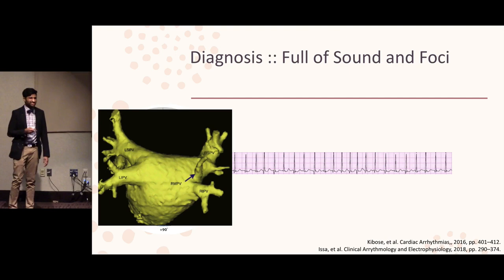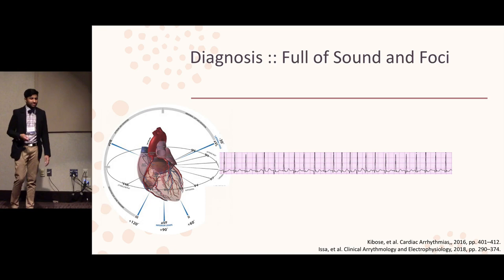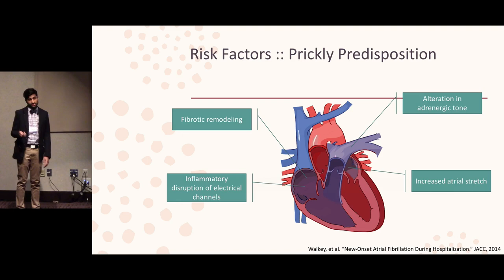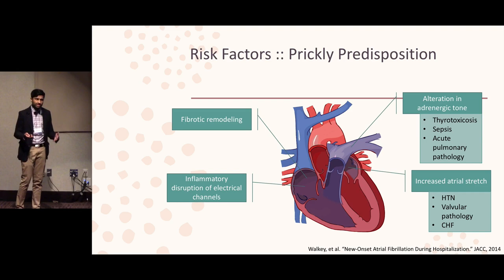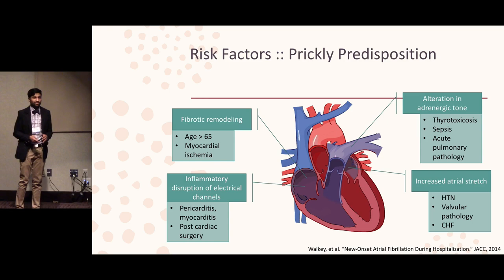In AFib, in 90% of cases, there's actually abnormal foci coming from the pulmonary veins. When the pulmonary vein sends out a signal, it's kind of like throwing a rock along a pond — it starts sending out ripples of activity throughout. But the pulmonary vein fibers are all irregularly displaced, so all the atria get activated at different times and different places. The atria are kind of fibbing a little bit — or AFib. What's exactly causing that AFib? There's a slew of different things: increased foci, increased adrenergic tone, increased atrial stretch, or abnormalities in how the electrical signal goes across the atria, like fibrotic remodeling or abnormalities in the electrical channels.